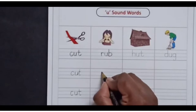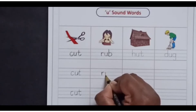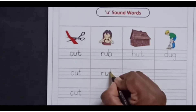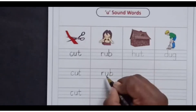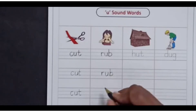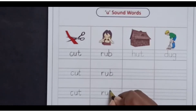The sound of R is R, the sound of U is U, and the sound of B is B. R-U-B, rub.